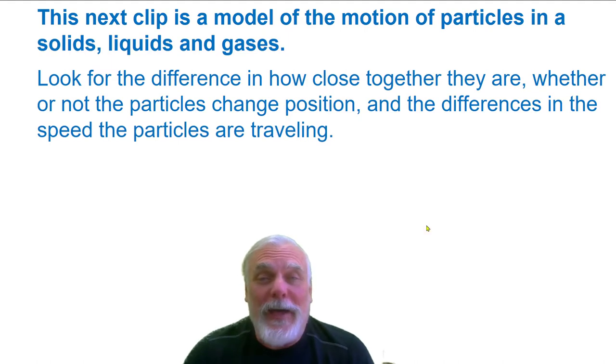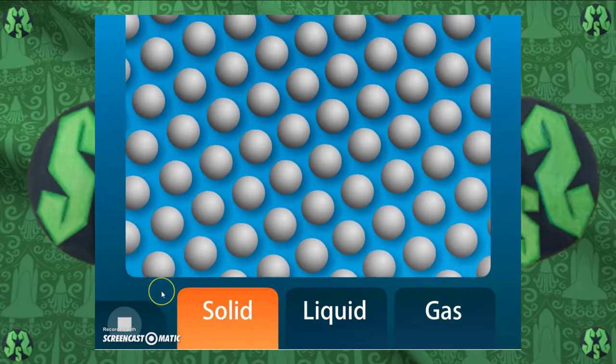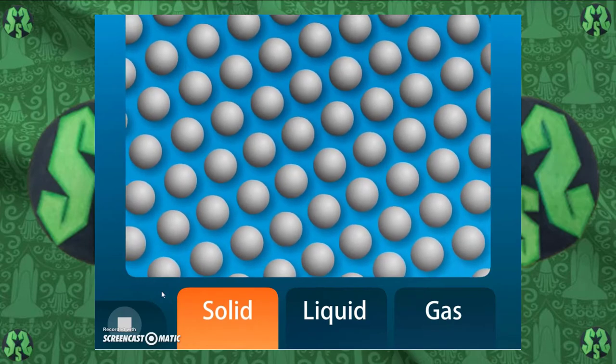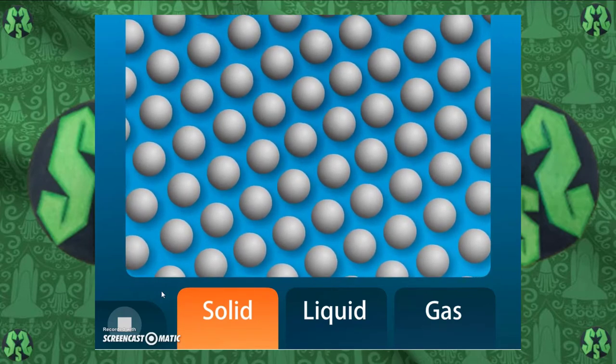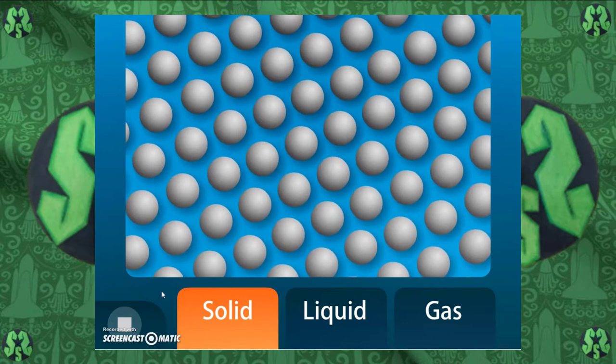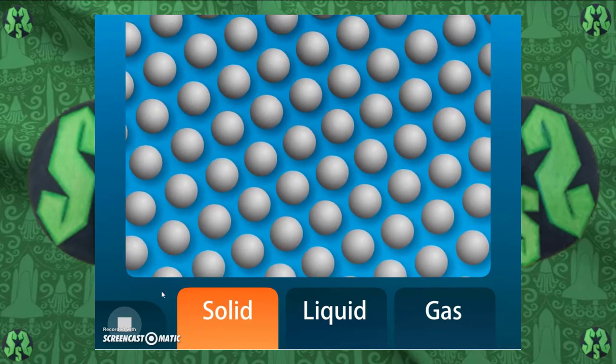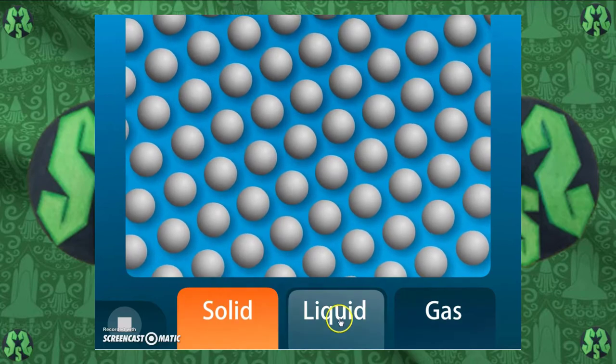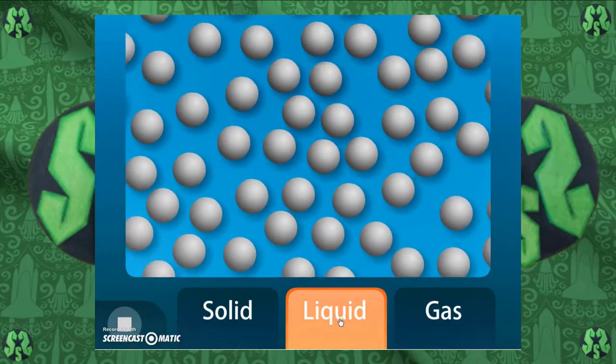Now, the next clip is a model of the motion of particles in solids, liquids, and gases. Look for the differences in how close together they are, whether or not the particles are changing position, and the differences in speed the particles are traveling. Solid versus liquid versus gas. Let's check it out.